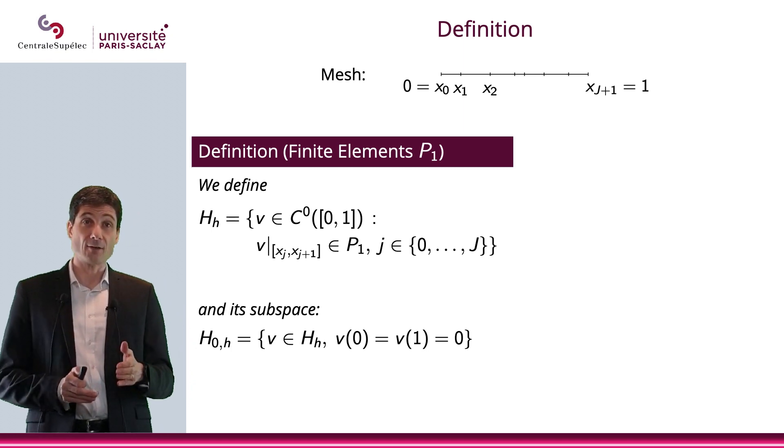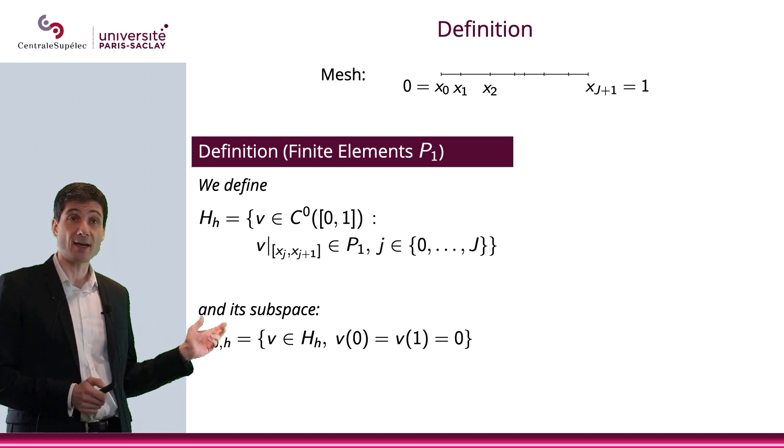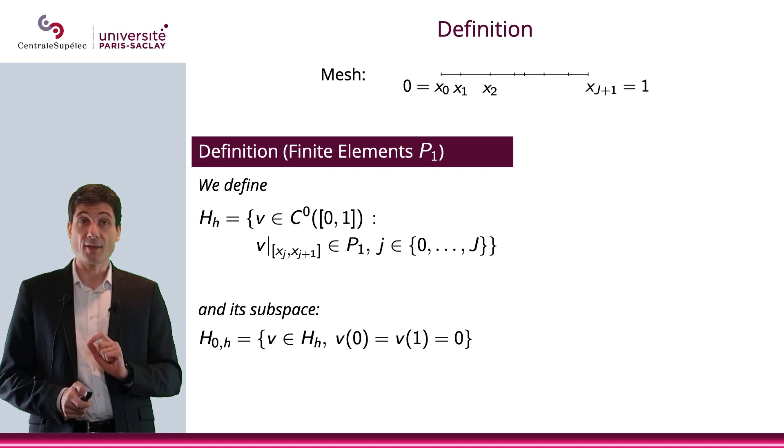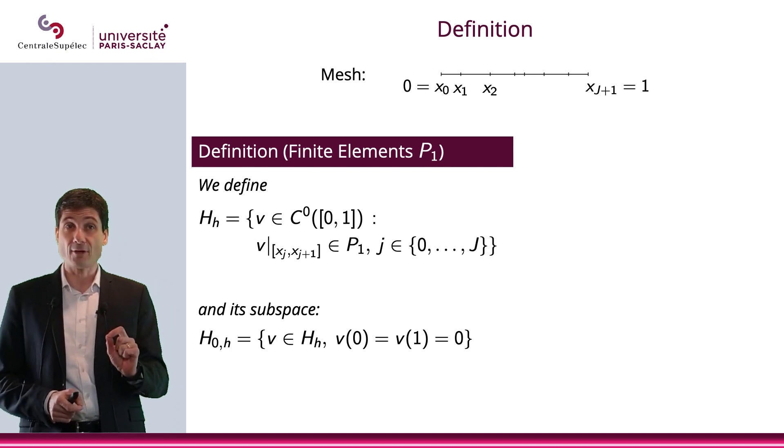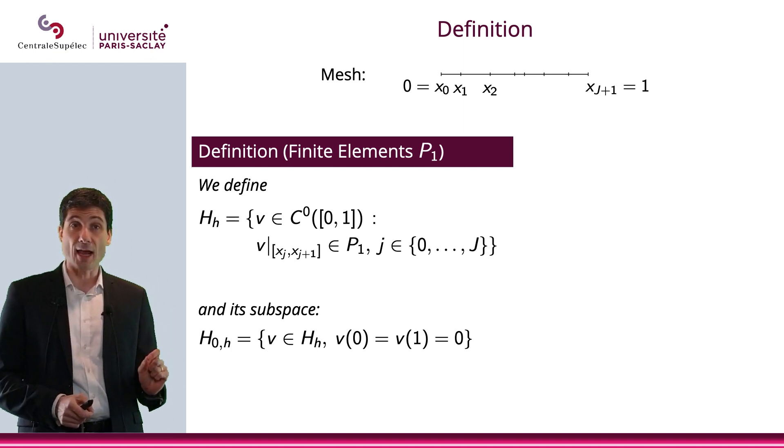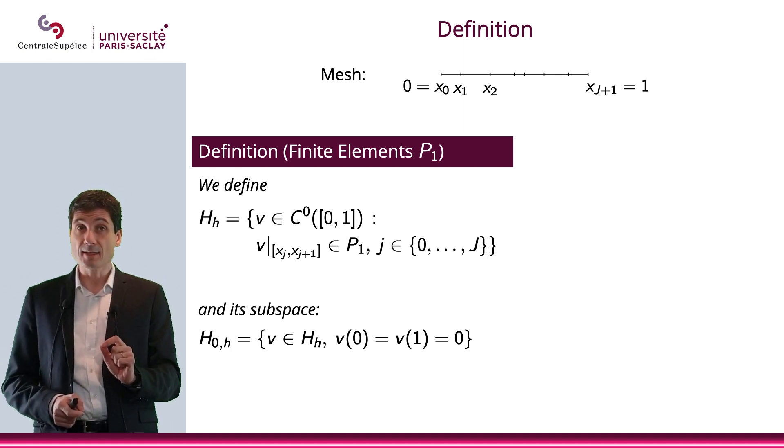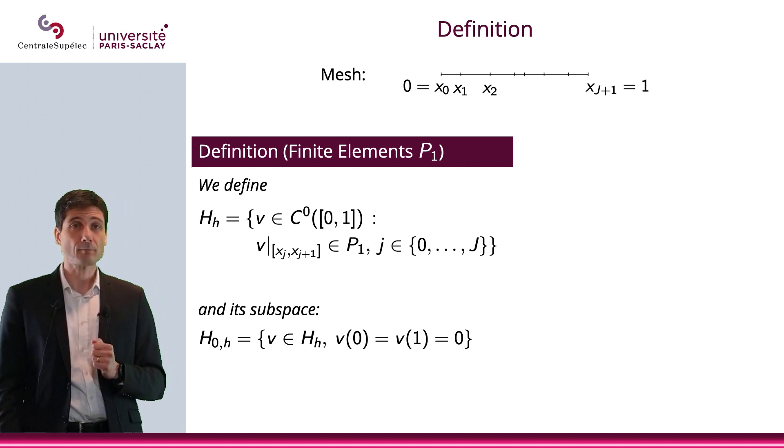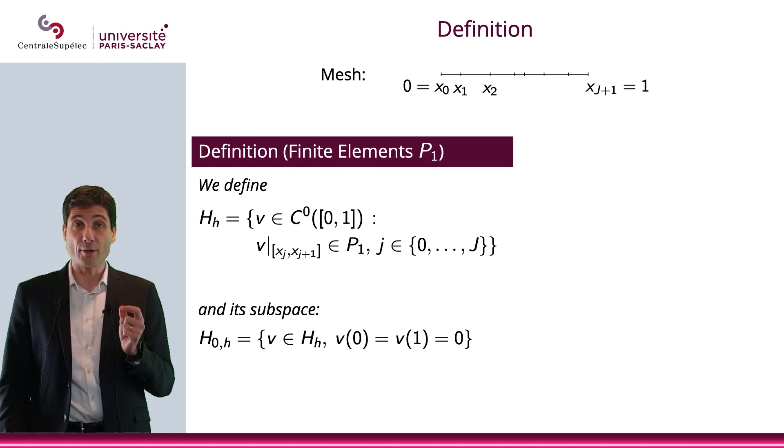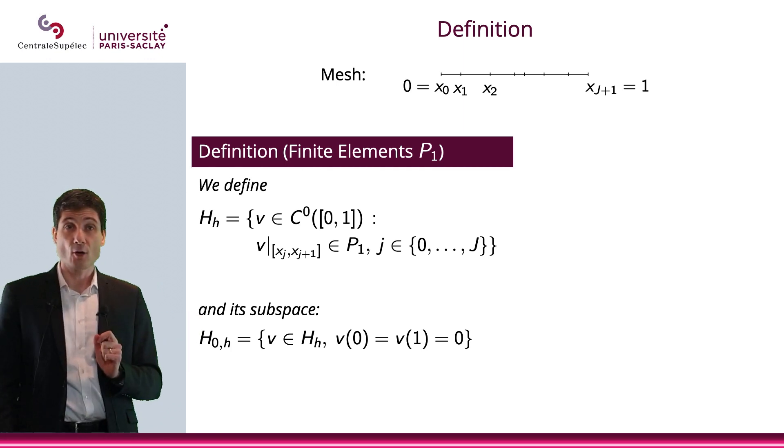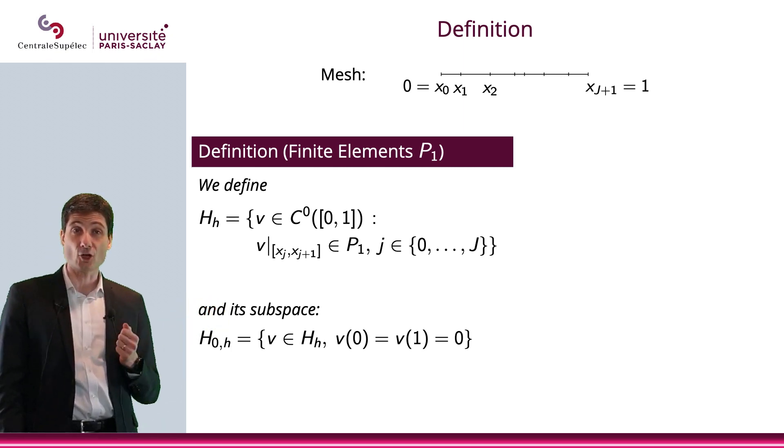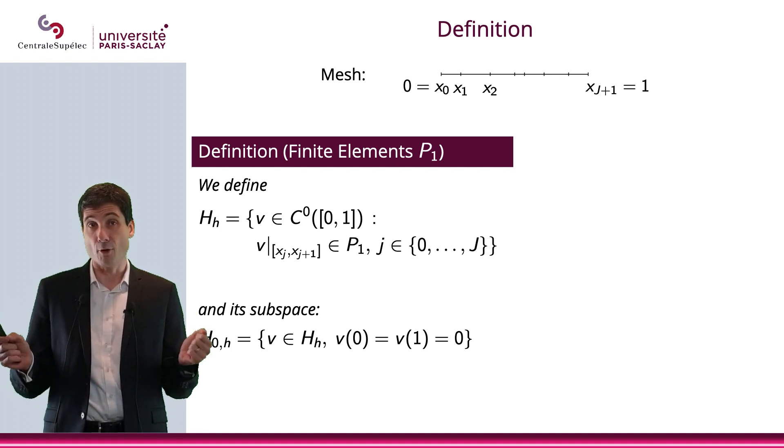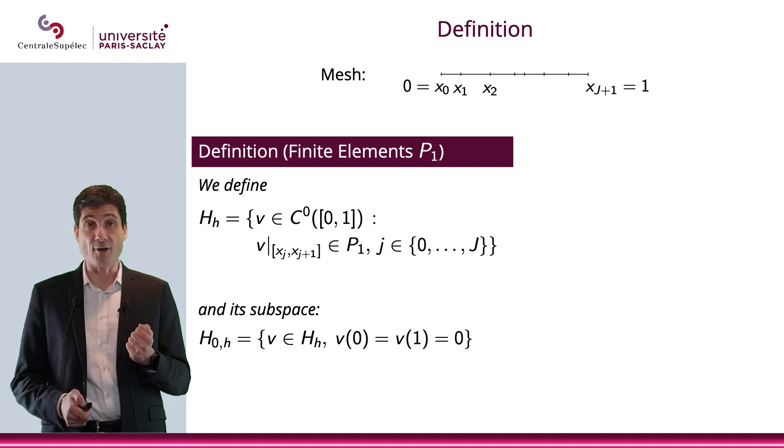Now, let me define the finite element P1. We're going to define this space H_h of all functions v that are continuous and such that the restriction of that function to the interval [x_j, x_{j+1}] is in P1. In other words, it is a polynomial of degree 1 or smaller. Then I will also define the subspace H_{0,h}, which will be all of the functions that are in H_h that on top of this will vanish on the boundary. In other words, v(0) = 0 and v(1) = 0.